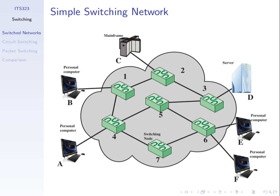We'll use this example through some of the slides. Of course, this is a simple network. Imagine a network across Thailand where maybe across Bangkok there may be tens of switches. In larger cities there may be several or tens of switches, and in the smaller cities or towns there may be one switch. They're all connected together, so we may have hundreds of switches and many links — a network covering the country will be much more complex than this.